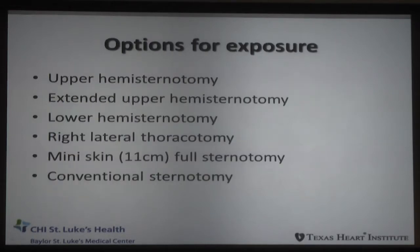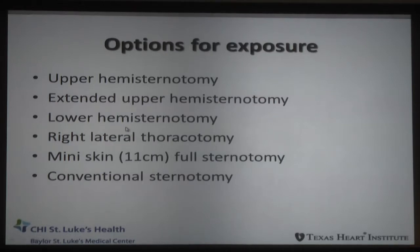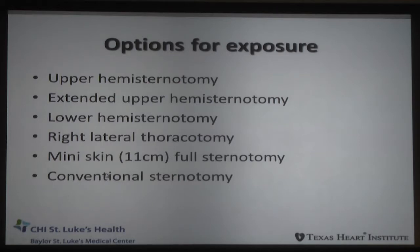The options for exposure are: upper hemi-sternotomy — which was the most popular from training in Cleveland; extended upper hemi-sternotomy, which comes down into the fifth intercostal space and is still a very small, six centimeter incision; lower hemi-sternotomy using the very bottom of the sternum; right lateral thoracotomy, which is very popular here; mini skin with a full sternotomy; or finally, conventional sternotomy. These are the different things we have to think about when we look at the particular patient.